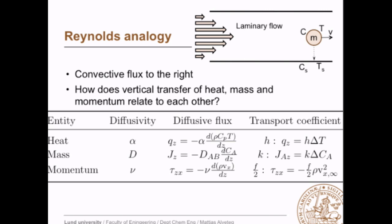We have a situation with laminar flow from left to right in a pipe, and we are studying a small volume with a certain mass. There is a certain concentration in there, this mass has a certain temperature, and it is moving to the right at a certain velocity v. As a comparison, we have some concentration close to the surface and a temperature Ts at the surface. The question we ask ourselves is: how does the vertical transfer of heat, mass, and momentum relate to each other?